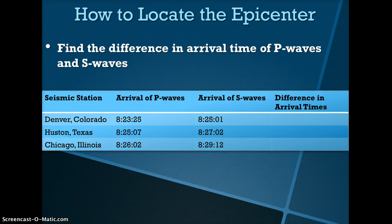Pause the video to try to figure out the difference in arrival times between P waves and S waves for Houston, Texas. The difference in arrival times will be 1 minute and 55 seconds.